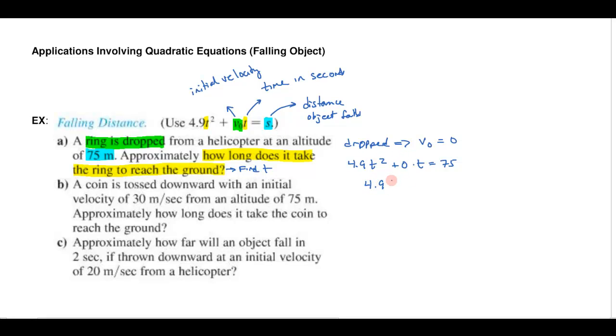4.9t² equals 75. I could do this one of two ways. I could bring the 75 on this side and plug it into the quadratic formula or since there's no middle term I could go ahead and just divide both sides by 4.9 and extract the square roots.